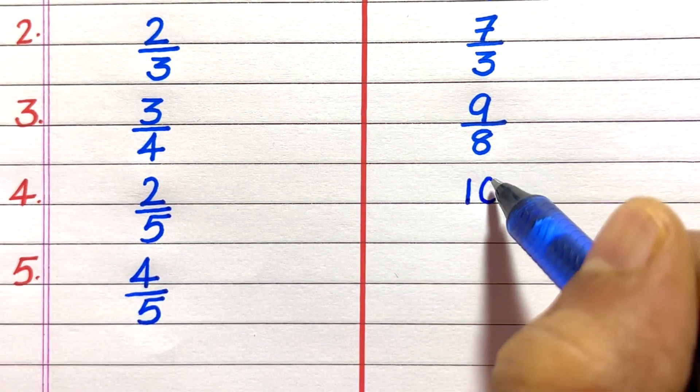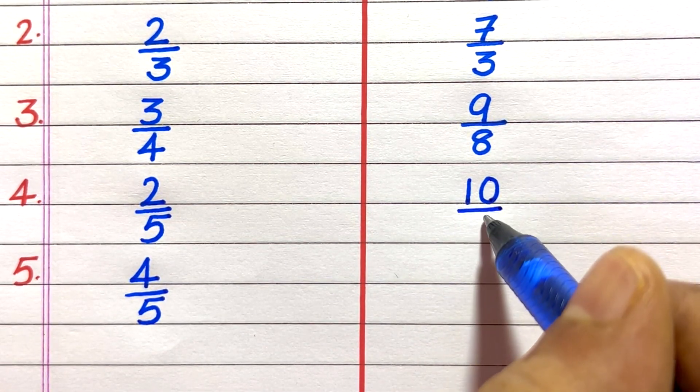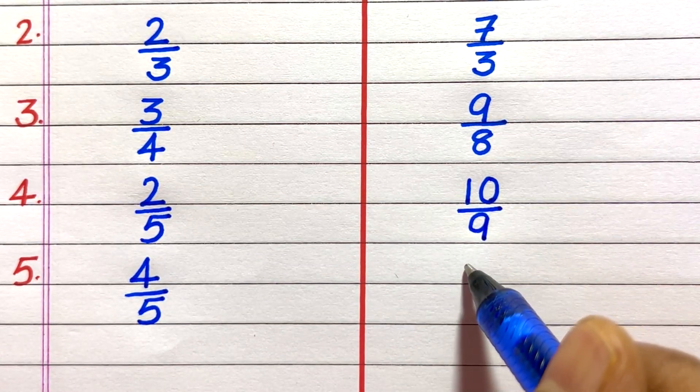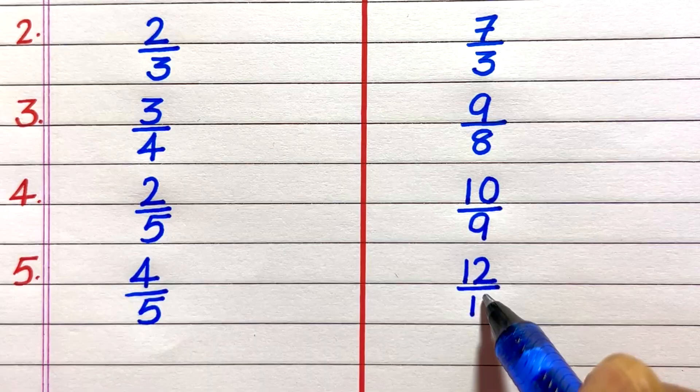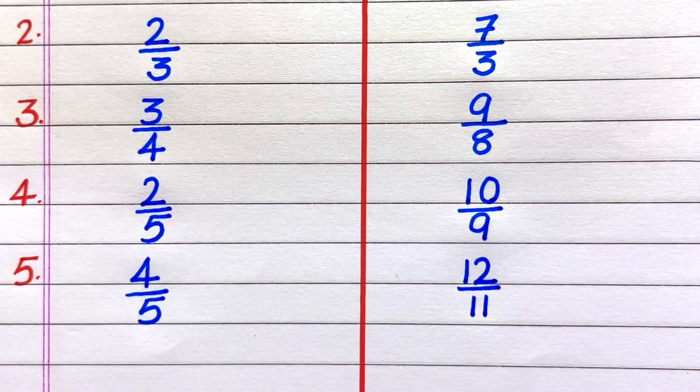Fourth example of an improper fraction is 10 by 9. Fifth, 12 by 11.